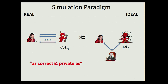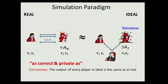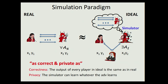More formally, by 'launching the same attack' we really mean it achieves the same effect on correctness and privacy. In particular for correctness, we would like the output of every player in both worlds to be the same. And for privacy, we would like the simulator to be able to learn whatever the real adversary can learn — by simply simulating its view.